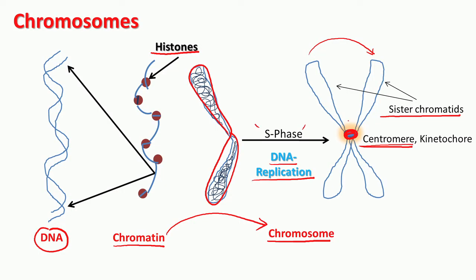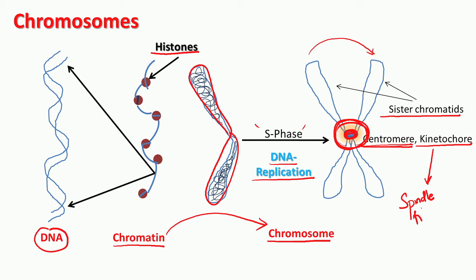The centromere is also surrounded by a certain class of proteins — depicted as a halo around the centromere — which is what you call the kinetochore. The kinetochore is a protein complex that helps in attaching the chromosomes to a very important structure during cell division: the spindle fibres.